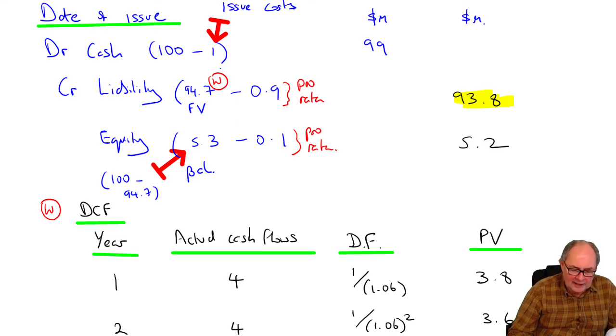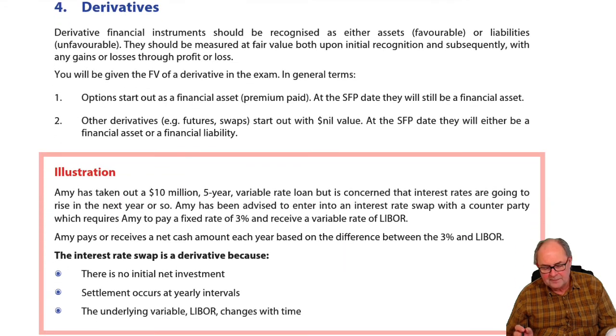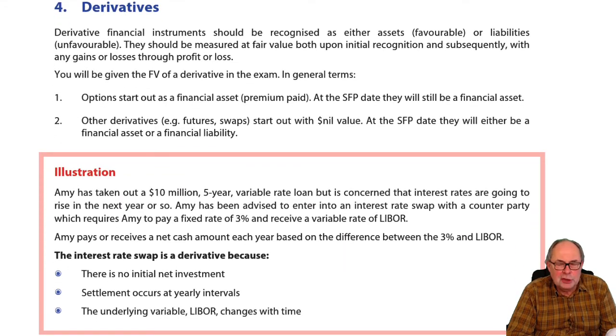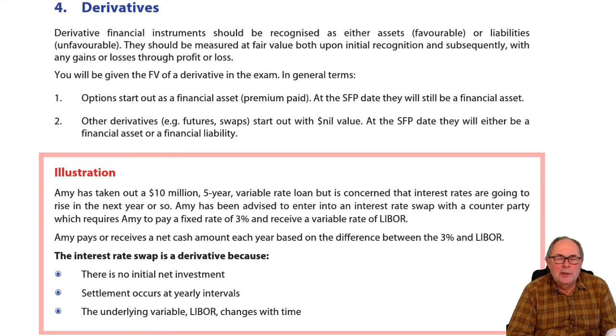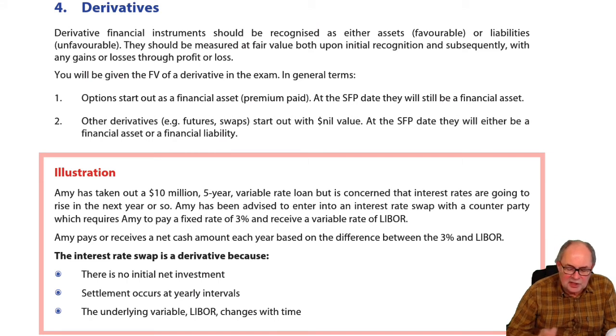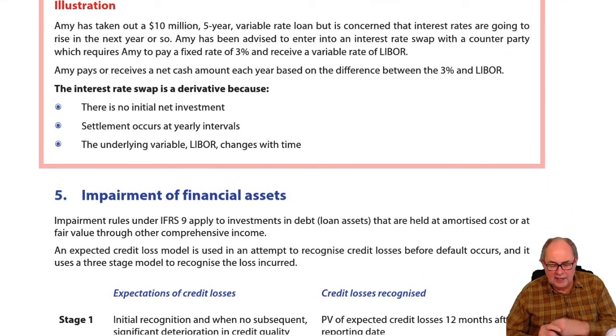Now we're going to look at one more thing. Next thing in the notes is just a couple of points about derivatives. We spoke about their definition before in the lectures. We said derivatives are things that require little or no investment, they are settled for cash at a future date, and their value somehow belongs to some kind of underlying asset. Let's start with derivatives by looking at this illustration.